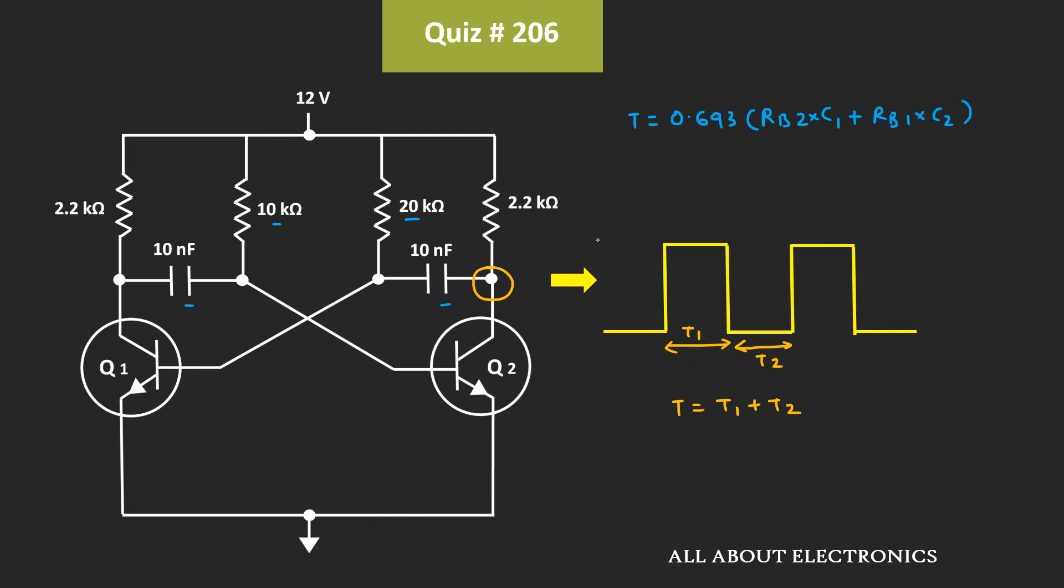So here, let's say this resistor is equal to Rb2 while this resistor is equal to Rb1. And these two capacitors are C1 and C2 respectively.